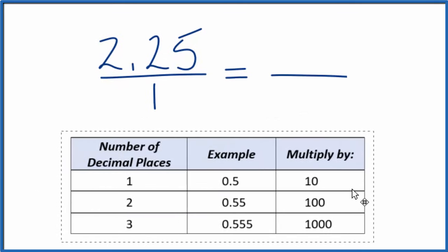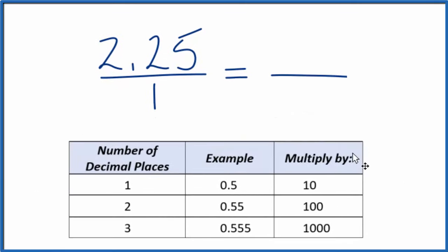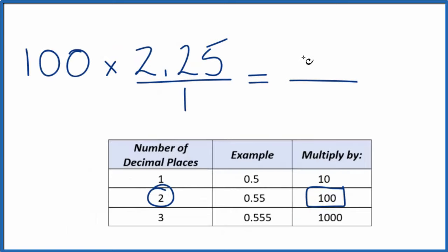Next, we can get that 2.25 to be a whole number. We can multiply it by 100. We have 2 decimal places. 2 decimal places, we multiply by 100. So 100 times 2.25, that's 225.